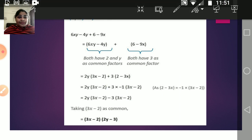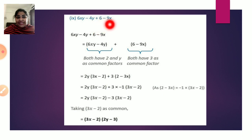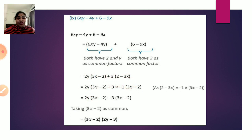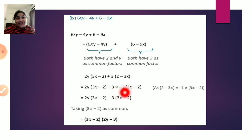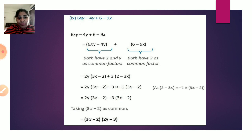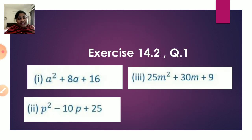The sum 6xy - 4y + 6 - 9x is solved by regrouping. From the first two terms, take 2y as common giving 2y(3x - 2); from the last two terms we get (6 - 9x) = -3(3x - 2). Now (3x - 2) is common in both, so the factors are (3x - 2)(2y - 3).